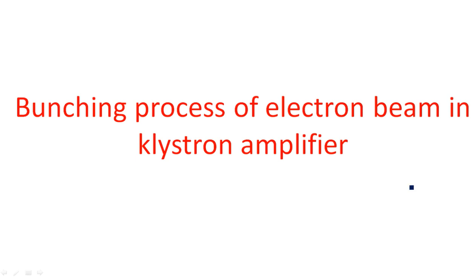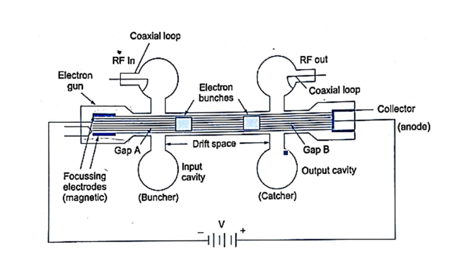In this bunching process, here is the Klystron amplifier diagram. V naught is the applied DC voltage between the cathode and anode. Capital V refers to voltage and small v refers to velocities, as discussed in the previous video. We are going to calculate this drift space L1, which is the distance between the two gaps — gap A and gap B.